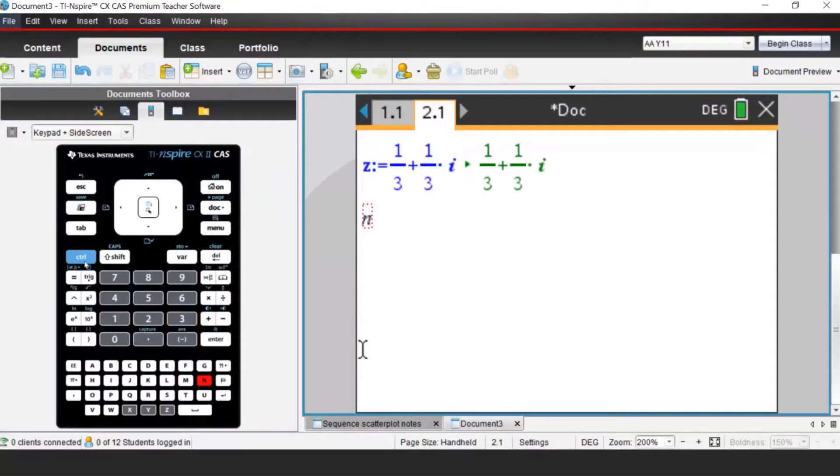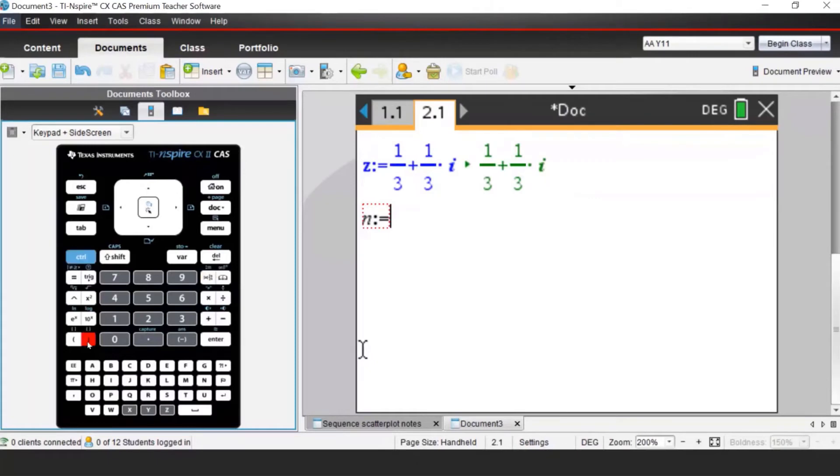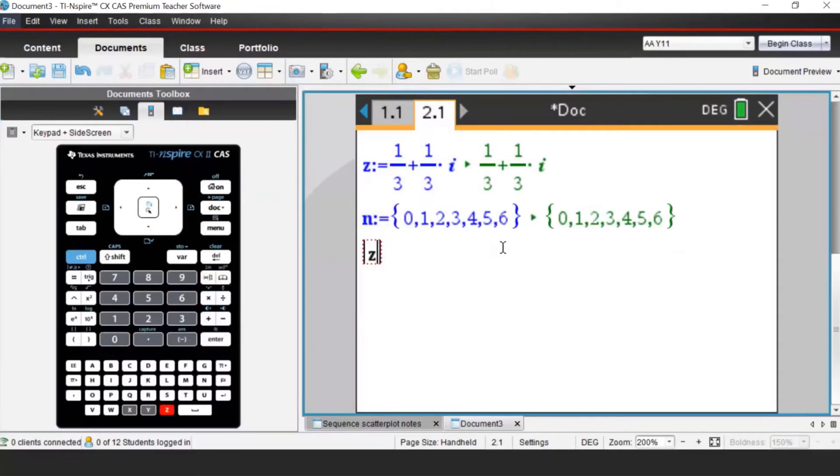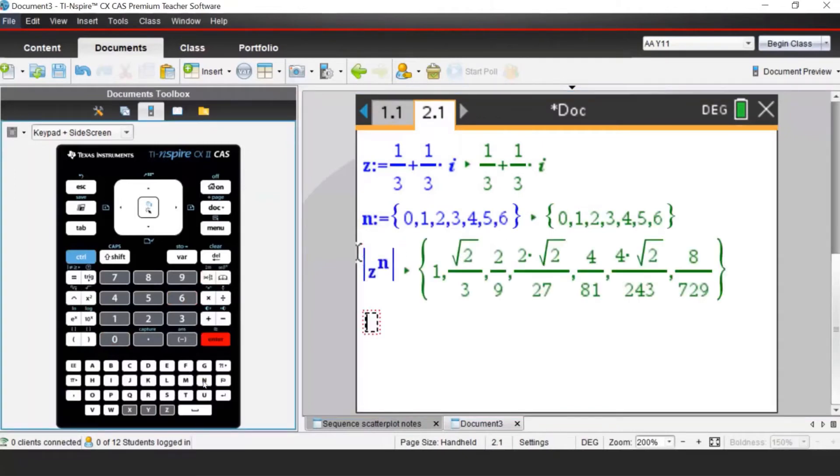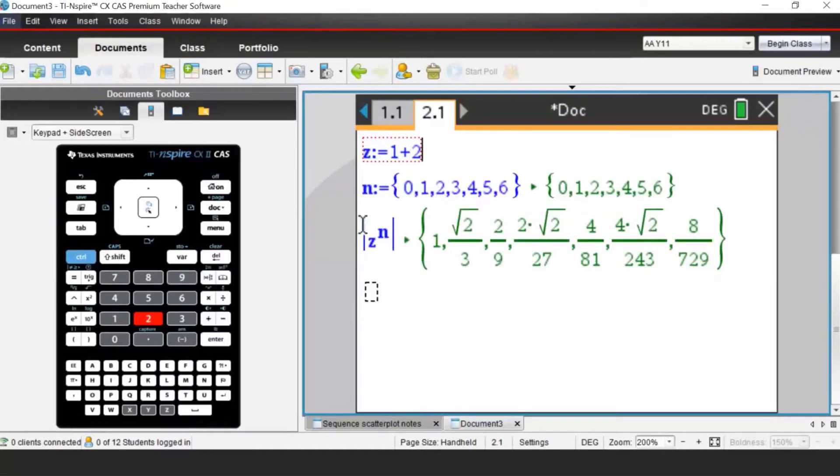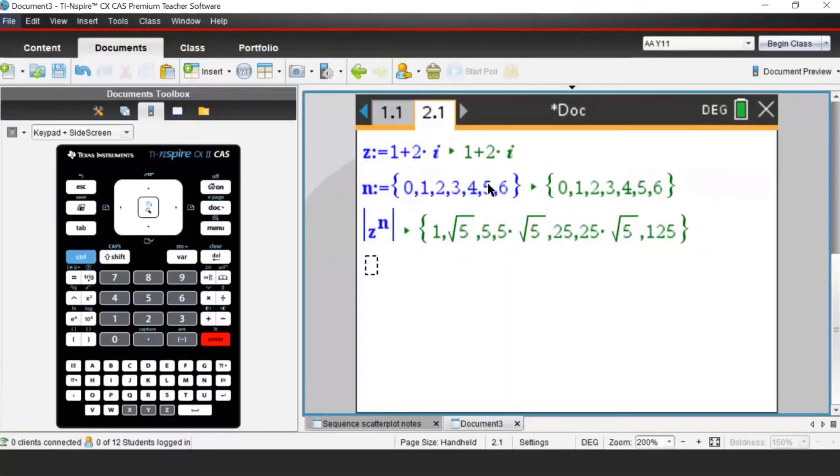Again, I can define in the similar way N as we did previously using the list 0, 1, 2, 3, 4, 5, 6, and I can find now in a similar way modulus of Z to the power of N. What happens if now I close that and I have already prepared my notes page, and I will change this complex number, let's say, to 1 plus 2i. You can see that everything gets recalculated very nicely. This is the advantage of using the notes page for your later calculations when you'll be doing different complex numbers.